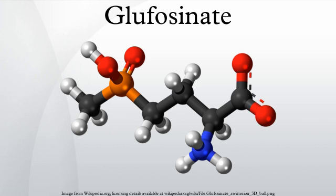Glufosinate is a broad-spectrum herbicide used to control important weeds such as morning glories, hemp sesbania, Pennsylvania smartweed, and yellow nutsedge, similar to glyphosate. It is applied to young plants during early development for full effectiveness. It is sold in formulations under brands including Basta, Rely, Finale, Challenge, and Liberty.